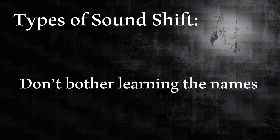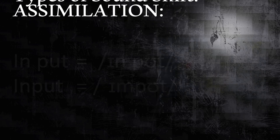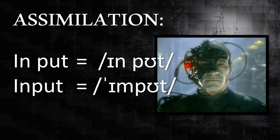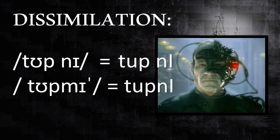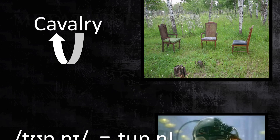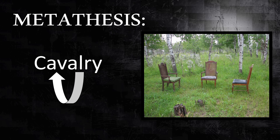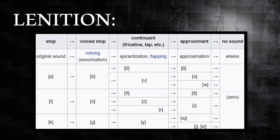So, types of sound shift — we've got tons of hard-to-remember scientific-sounding terms here. Assimilation: sounds becoming more similar to each other, like how the /n/ in 'input' is pronounced /m/, because it's closer to the following /p/. And dissimilation is like assimilation but the other way around. Metathesis: it's musical chairs but for sounds, like how some people pronounce 'cavalry' as 'Calvary.' And lenition: consonants becoming softer.